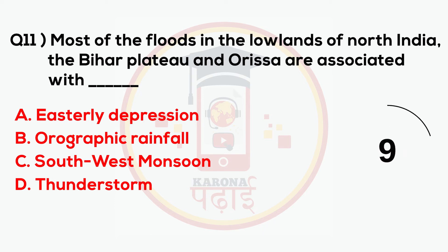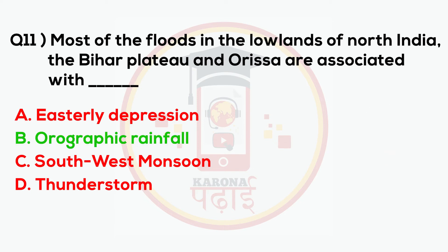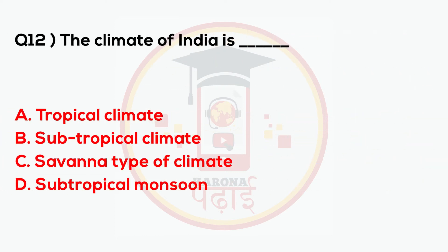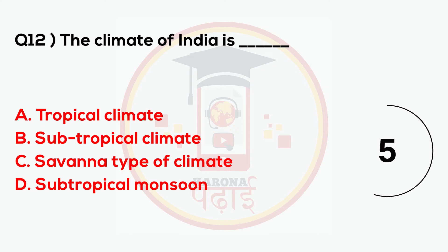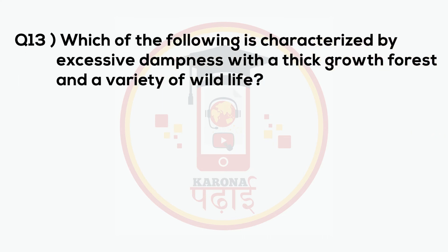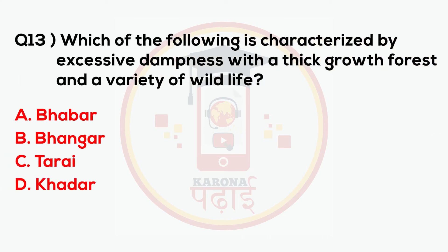Most of the floods in the lowlands of North India are associated with the Bihar Plateau and Orissa, due to orographic rainfall. The climate of India is subtropical monsoon.